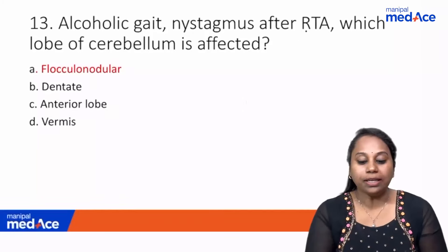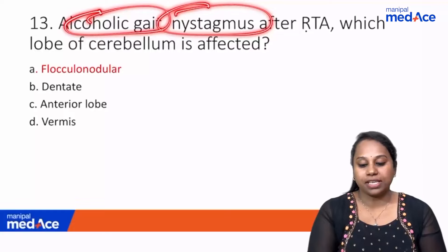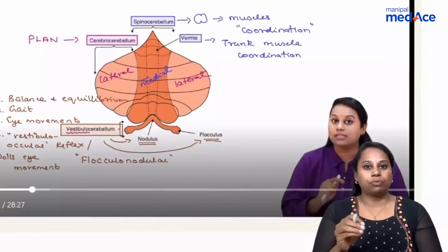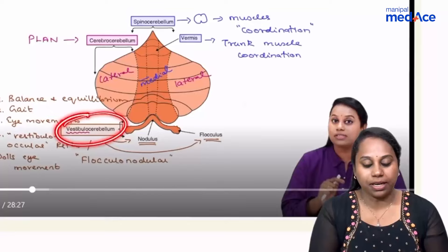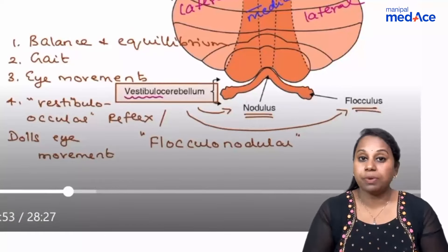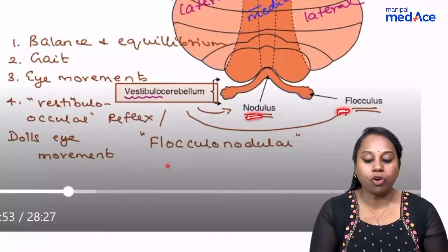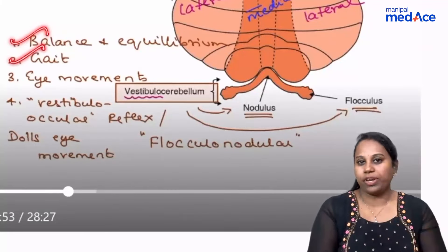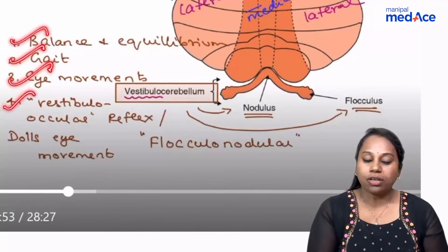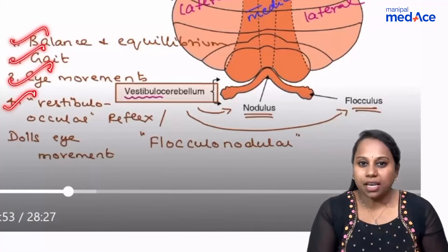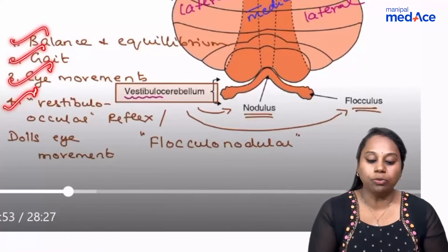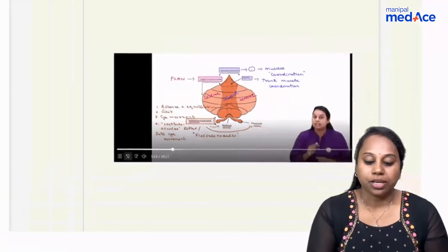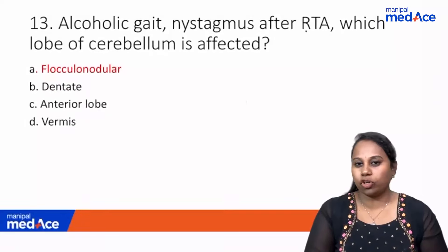Question 13: Alcoholic gait and nystagmus — which lobe of the cerebellum is affected? The vestibulocerebellum (flocculonodular lobe), the oldest part of the cerebellum with flocculus and nodulus, is responsible for balance, equilibrium, gait, and eye movements including the vestibulo-ocular reflex. Damage causes problems with gait and nystagmus. Answer: vestibulocerebellum or flocculonodular lobe.